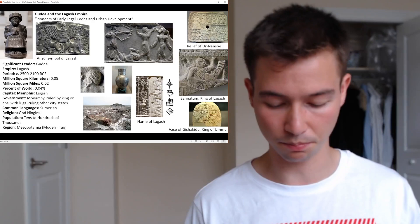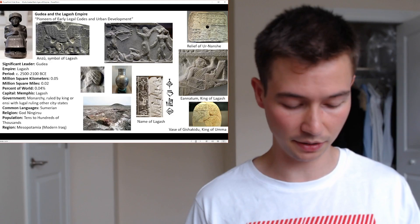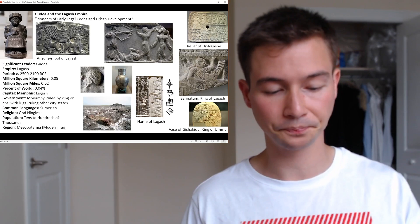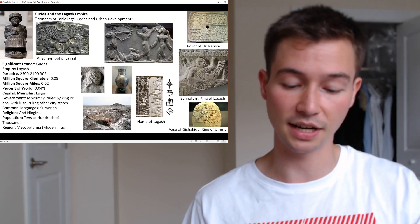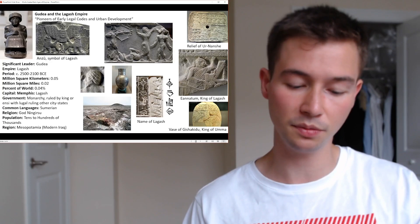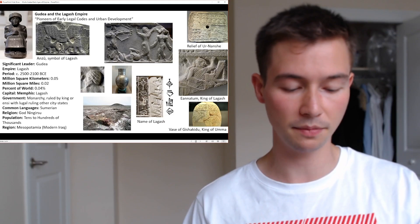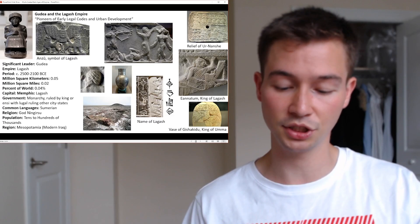Gudea left behind a rich corpus of inscriptions known as the Gudea Cylinders, which detail his religious beliefs, devotions, and the construction projects he undertook in honor of Ningirsu. These inscriptions serve as a primary source for understanding his religious fervor. His most enduring legacy lies in his extensive construction projects dedicated to Ningirsu: he commissioned the rebuilding of the temple complex, including E-Ninnu, the primary temple of the city, and E-Dub-lal-mah, a secondary temple. He also undertook the construction of the ziggurat of Girsu — a monumental stepped tower serving as a physical manifestation of the connection between the earthly realm and the divine.